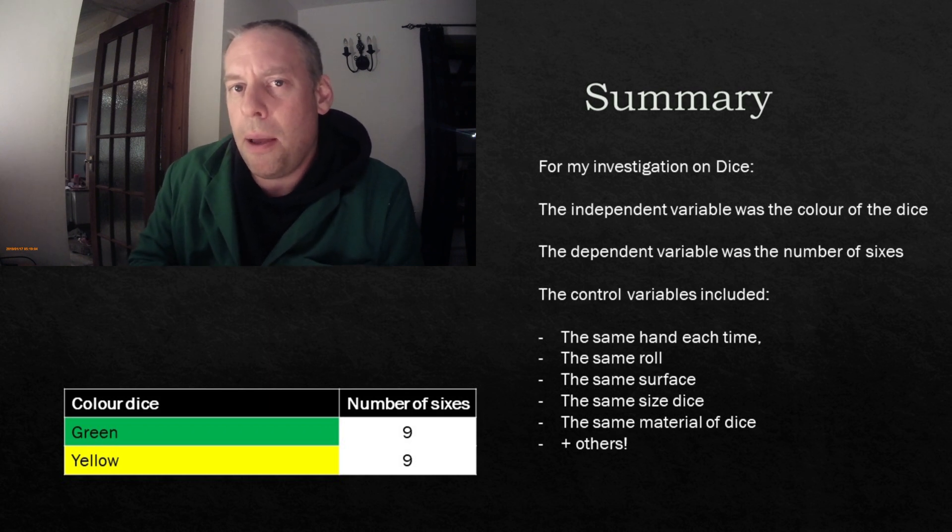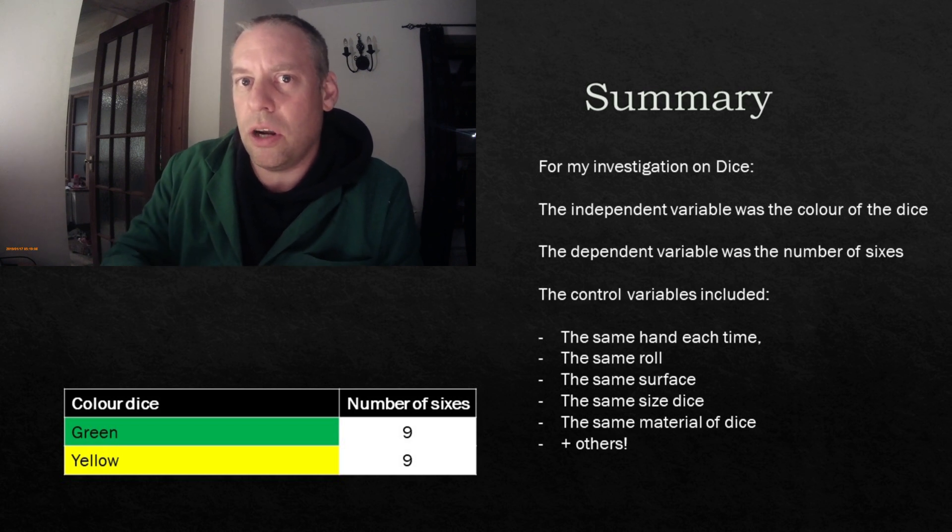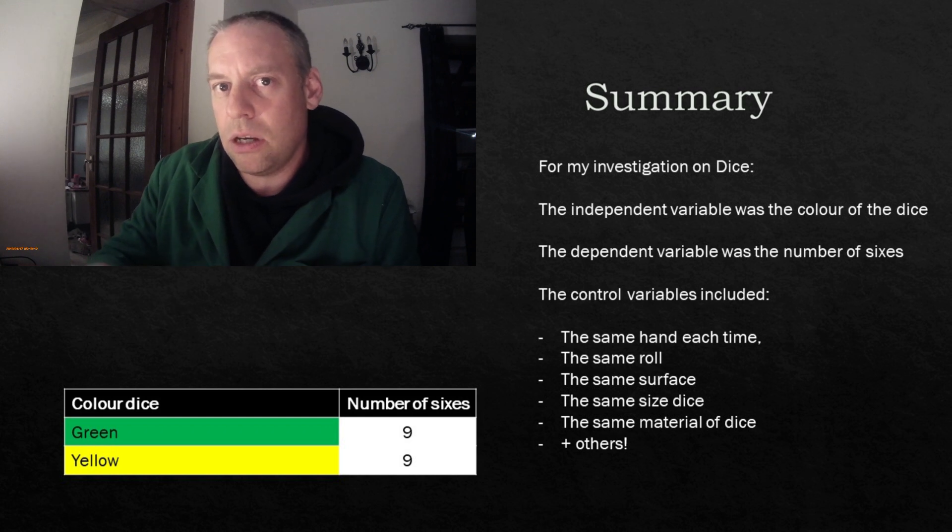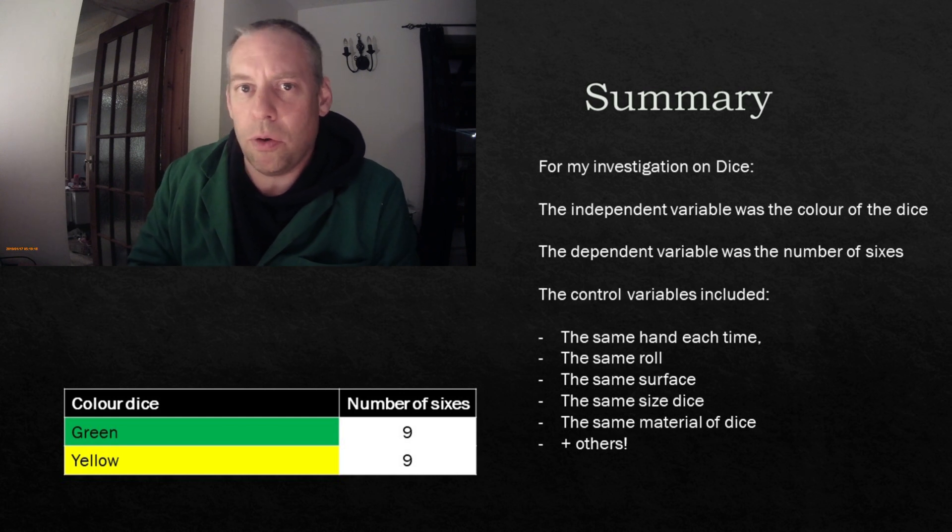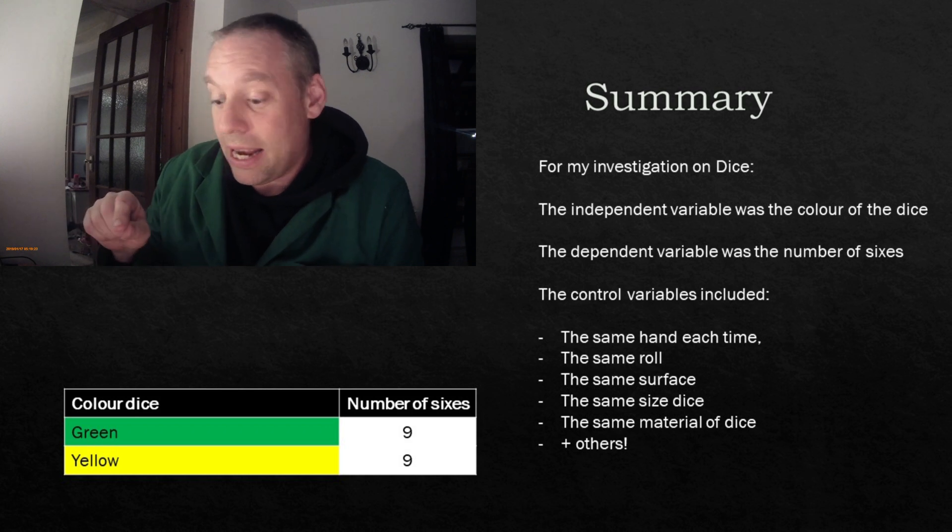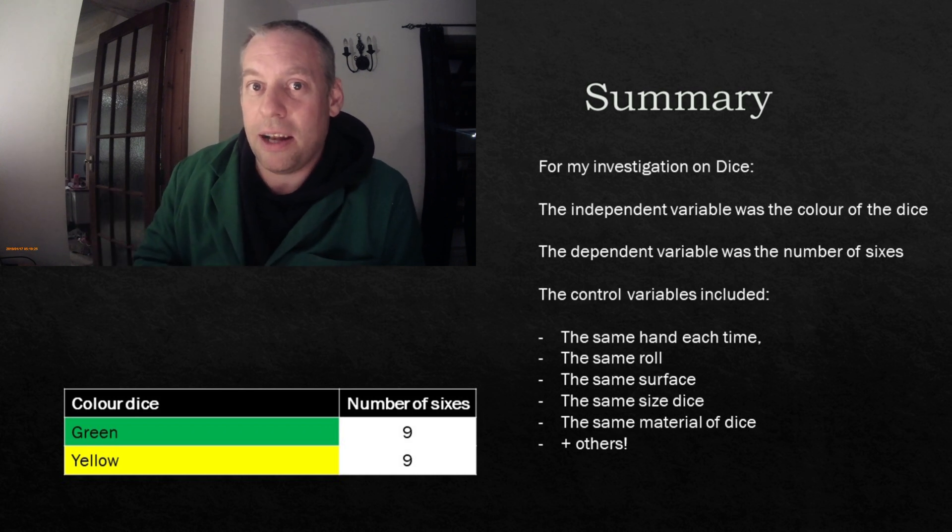Being able to prove that something isn't a correlation, a relationship, is equally as important as proving that something is a relationship. So what I can now do is when my children are arguing over who has the yellow, green, or red dice, I can show them scientifically and empirically that it is not the case. And so, therefore, I have less arguments in my household. So, let's have a quick look at the summary.